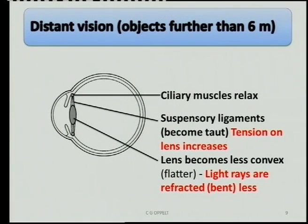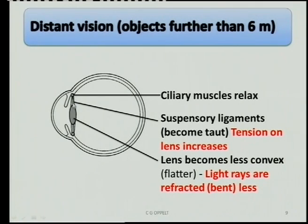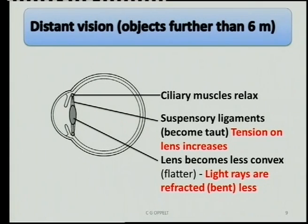When we look at any object that is farther than six meters away from the eye, we normally say that the eye is unaccommodated. There are three things to point out about what is happening with the lens. The lens is kept in position by the suspensory ligaments. When they become taut or constrict, they pull the lens flatter. The suspensory ligaments and the ciliary muscle work antagonistically — when the suspensory ligaments constrict, the ciliary muscle relaxes, and the tension of the lens increases so it becomes flatter.